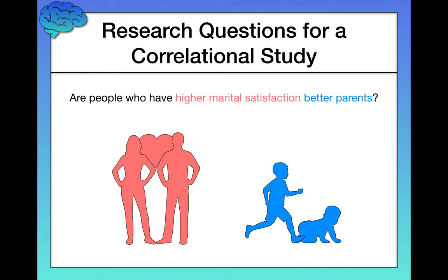This is something, for example, that a developmental psychologist might be interested in, but this is great for a correlational design because we have two different variables. Is there a relationship between marital satisfaction and parenting quality or ability?